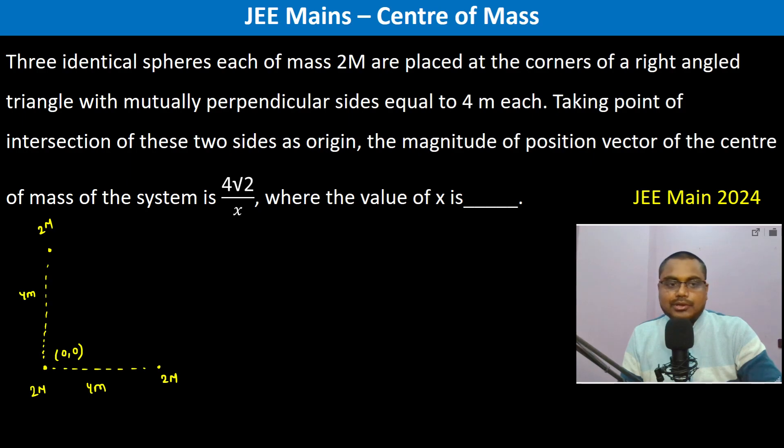The magnitude of the position vector of the center of mass of the system is 4√2/x, where the value of x is. So basically, what do we do?